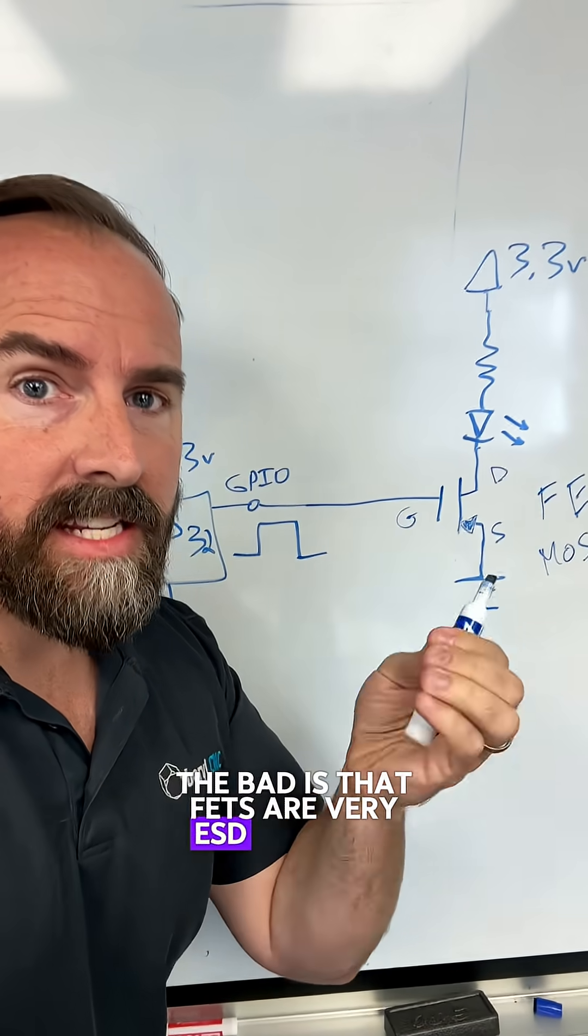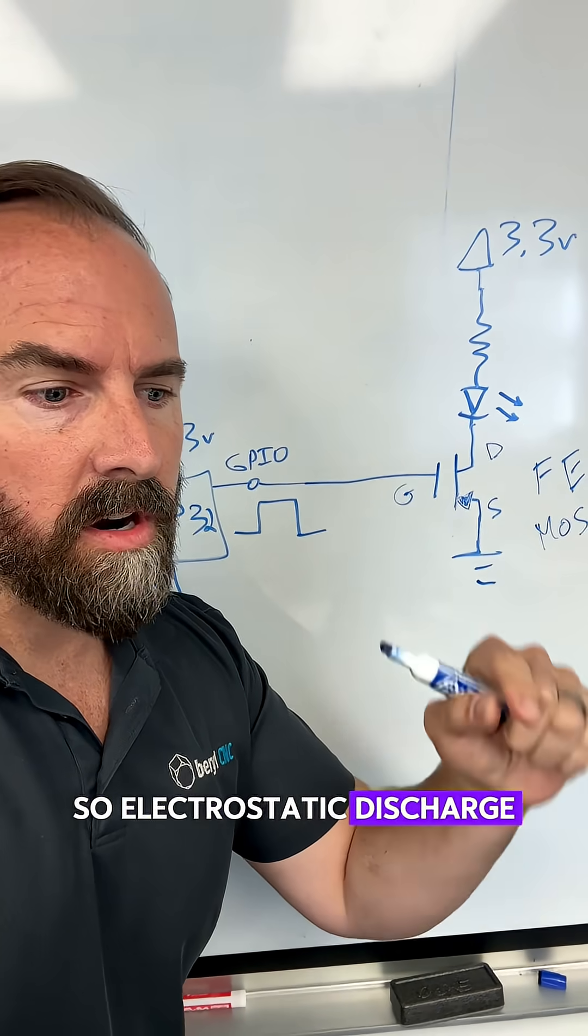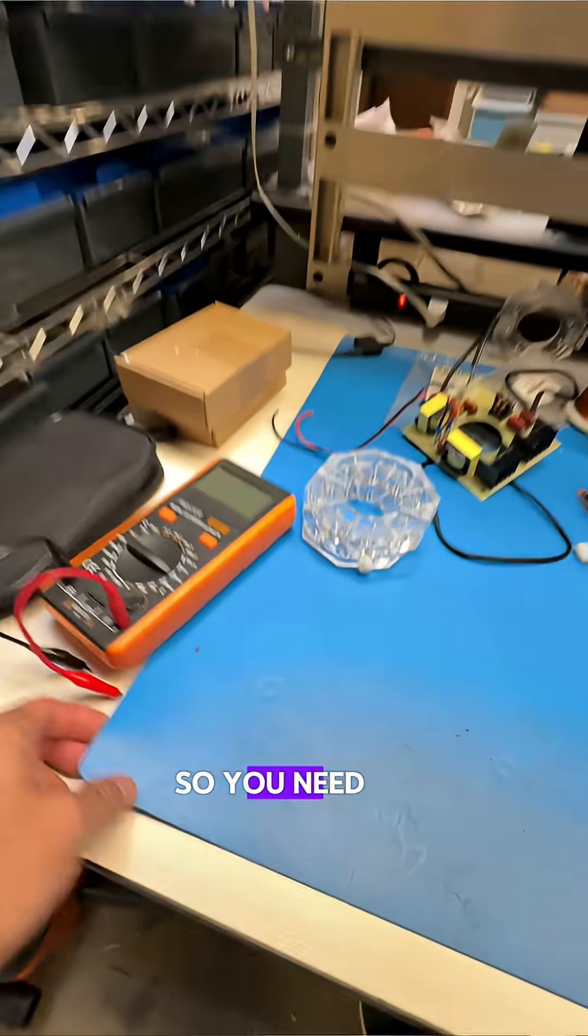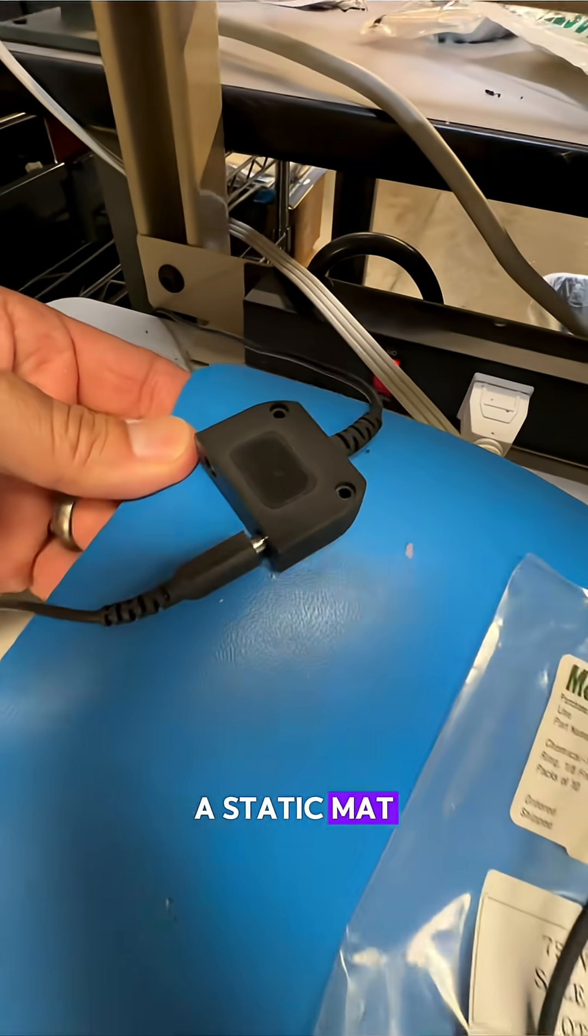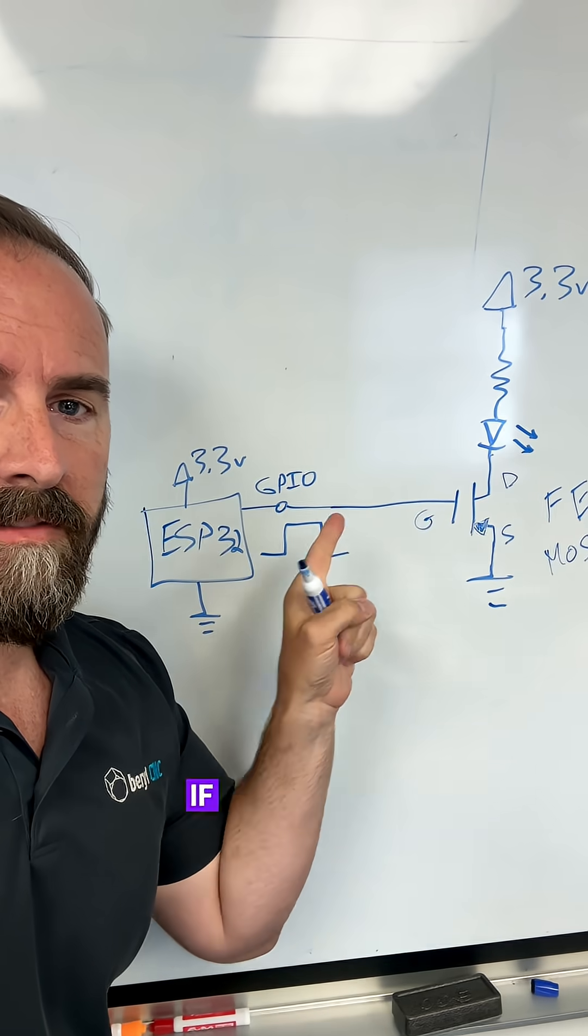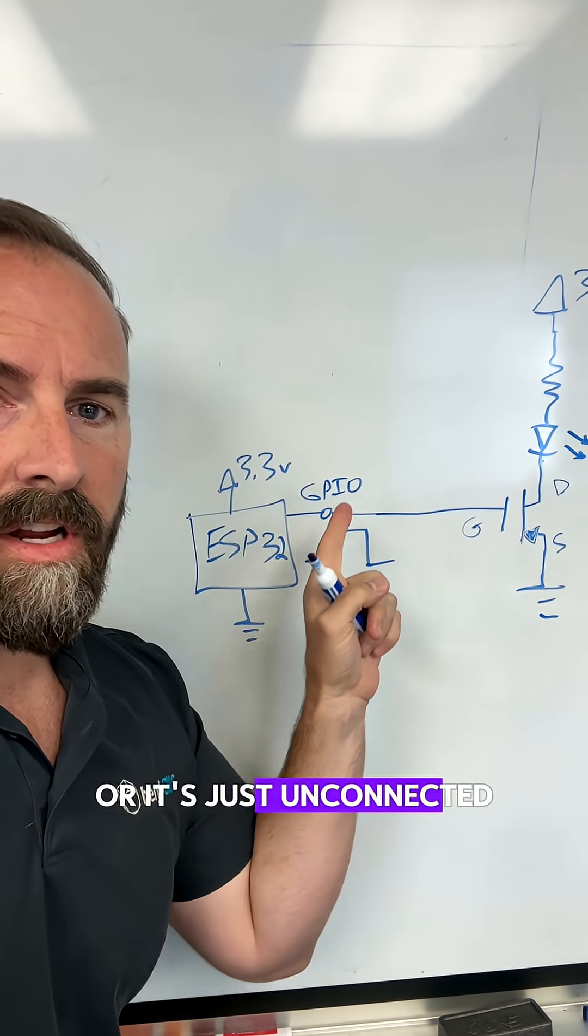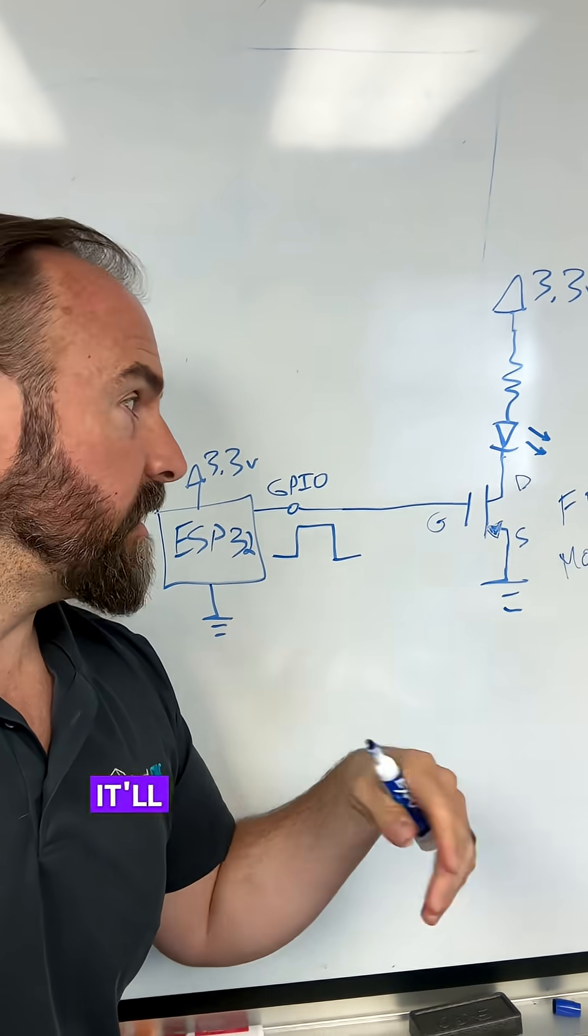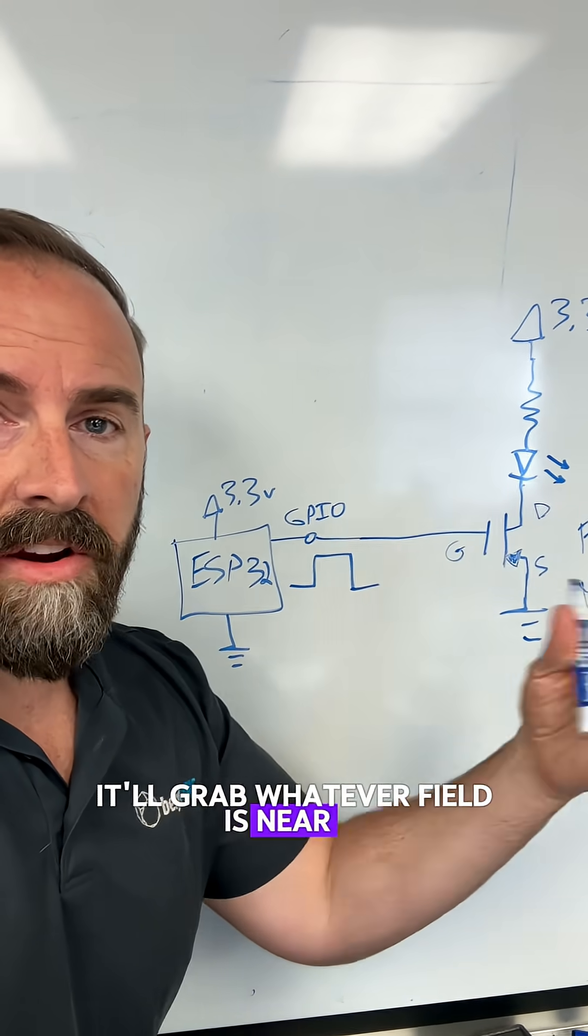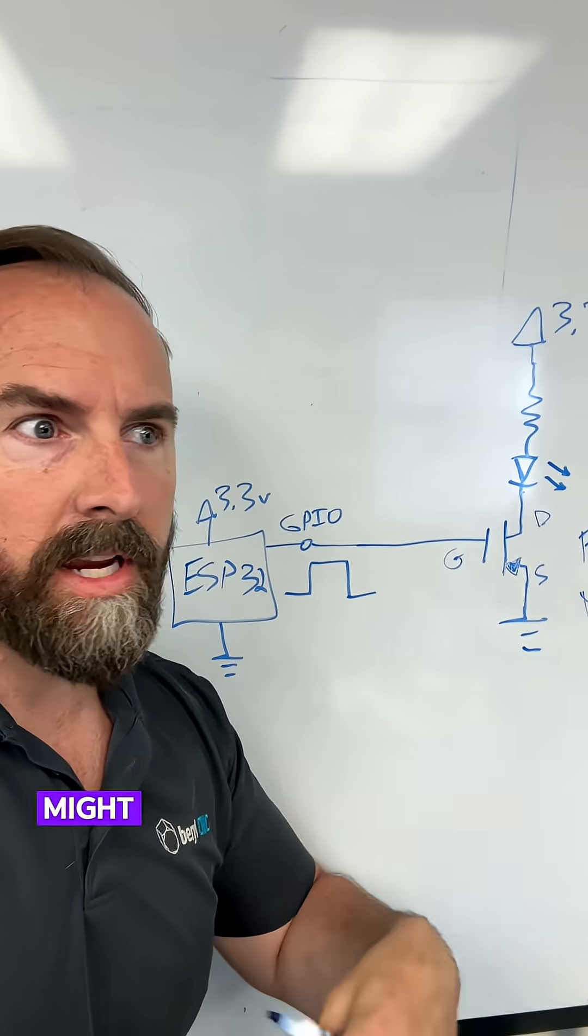The bad is that FETs are very ESD sensitive. So electrostatic discharge, you could damage the part just handling it. So you need to be very well grounded using a static mat. The other bad thing about a FET is that if this gate is left floating, so if your microcontroller is like in a tri-state or it's just unconnected, this will float around. It'll grab whatever field is near it. So it might turn on, might turn off, might go somewhere in between.